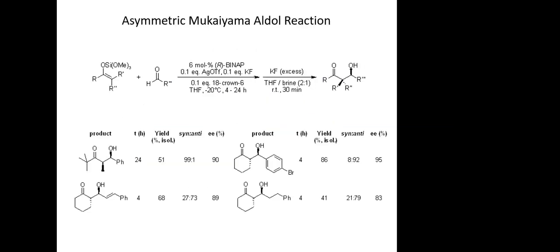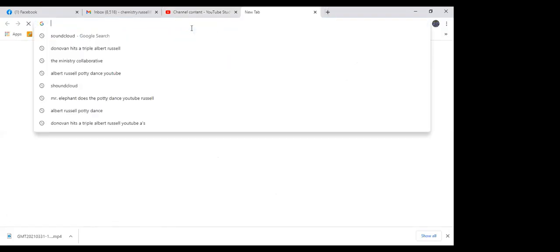We've talked about the Mukaiyama aldol already, so now let's talk about the asymmetric version and what type of chiral catalyst is used. With the Mukaiyama aldol addition you can use the silyl enol ether or a silyl ketene acetal. The ligand in this case is BINAP with silver triflate, and this is run in 18-crown-6, which is a crown ether solvent.